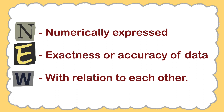The data collected is through a reasonable standard of accuracy. High degree of accuracy is not insisted in statistical studies. W in NEW stands for with relation to each other. Statistical data provides information about mutual relationship among elements of the data set. For example, from the data collected on poverty and family size of a group of families, it can be established whether family size has any impact or not on poverty.